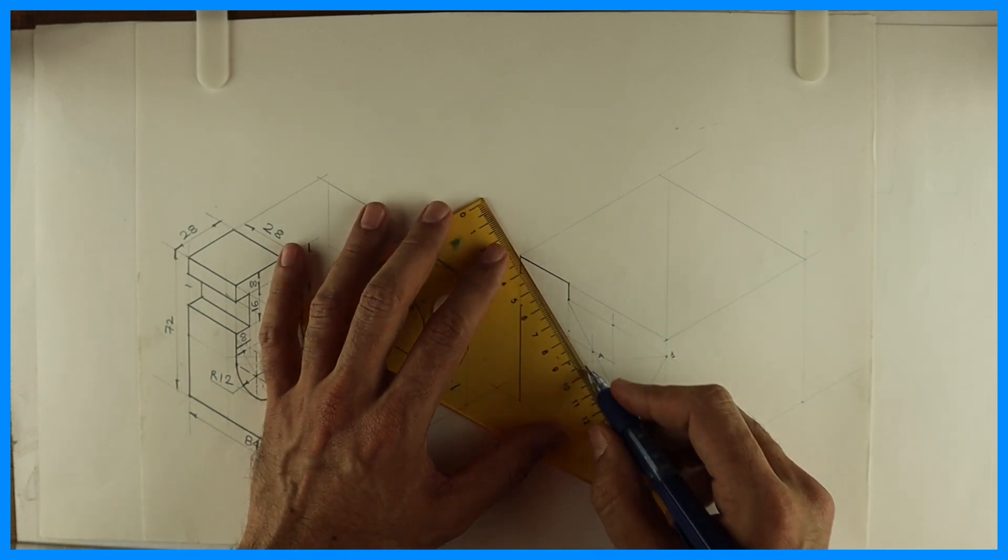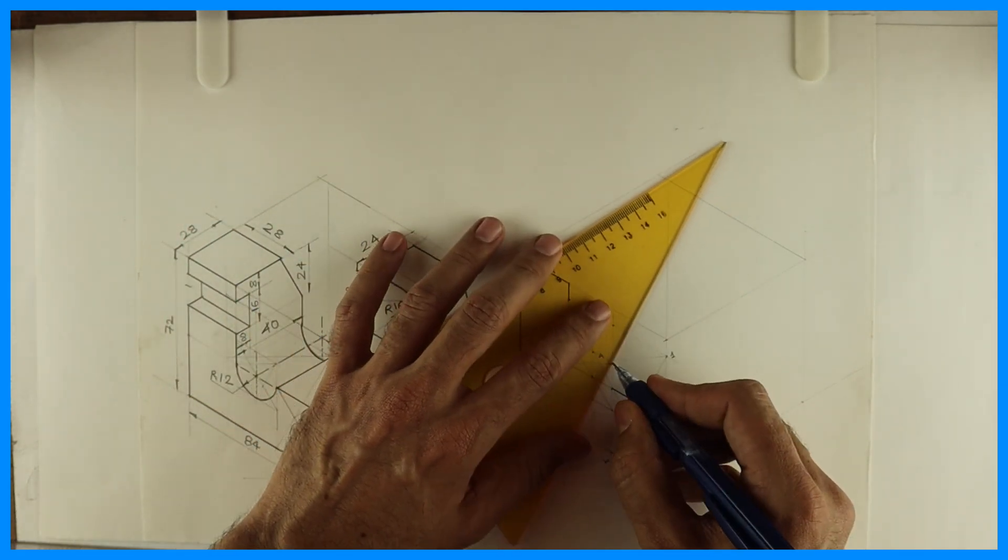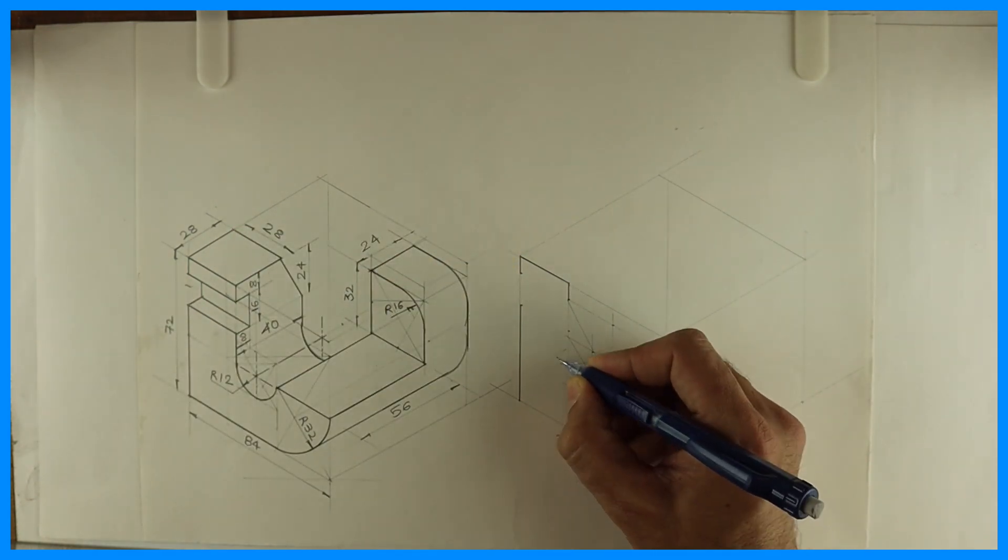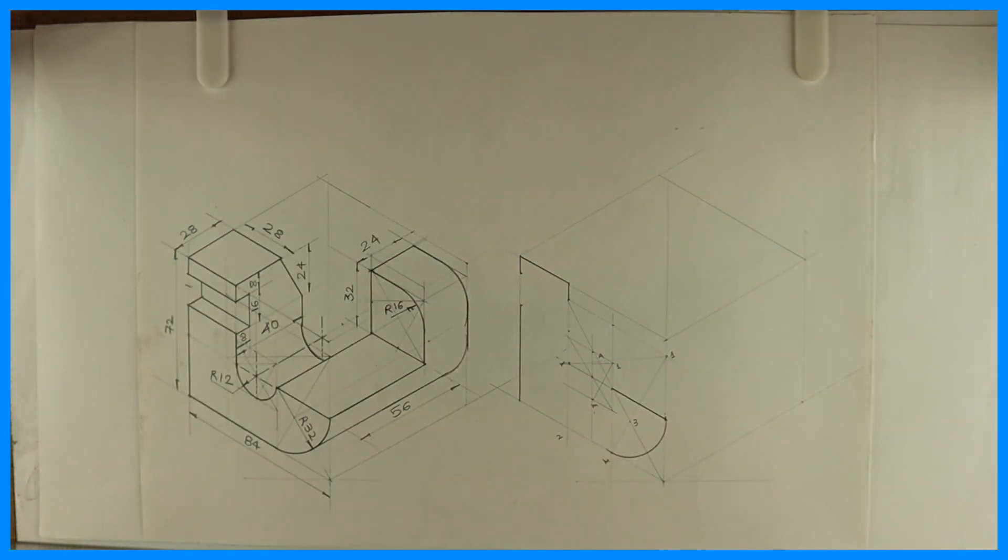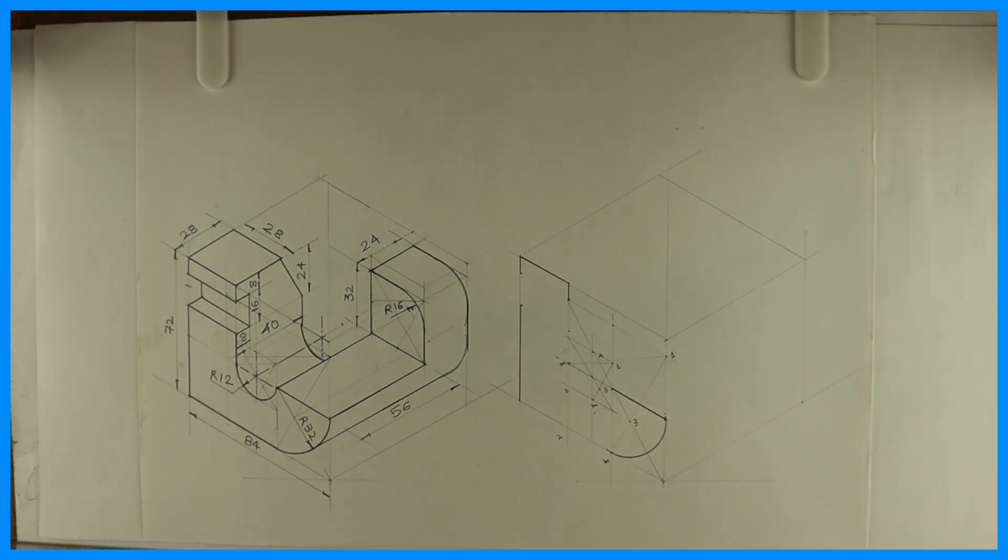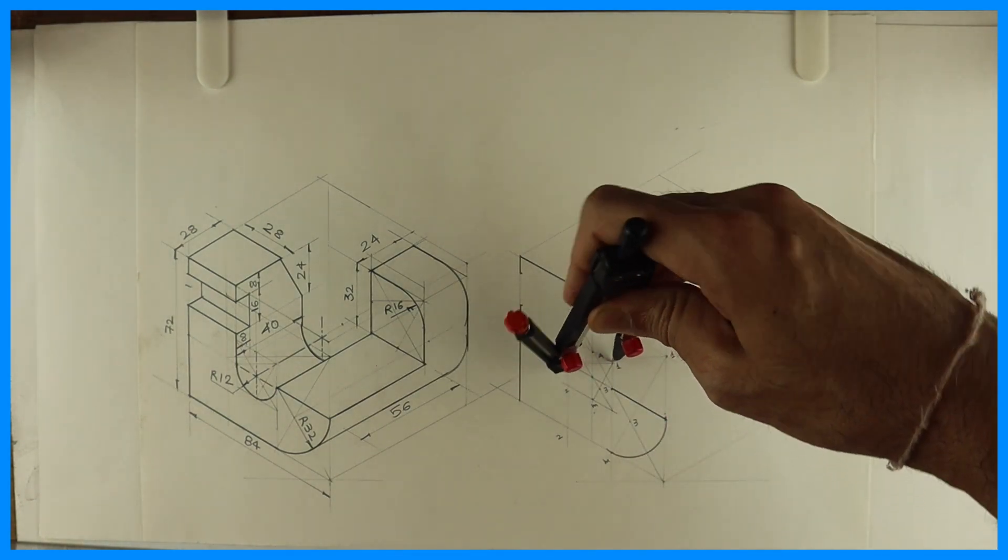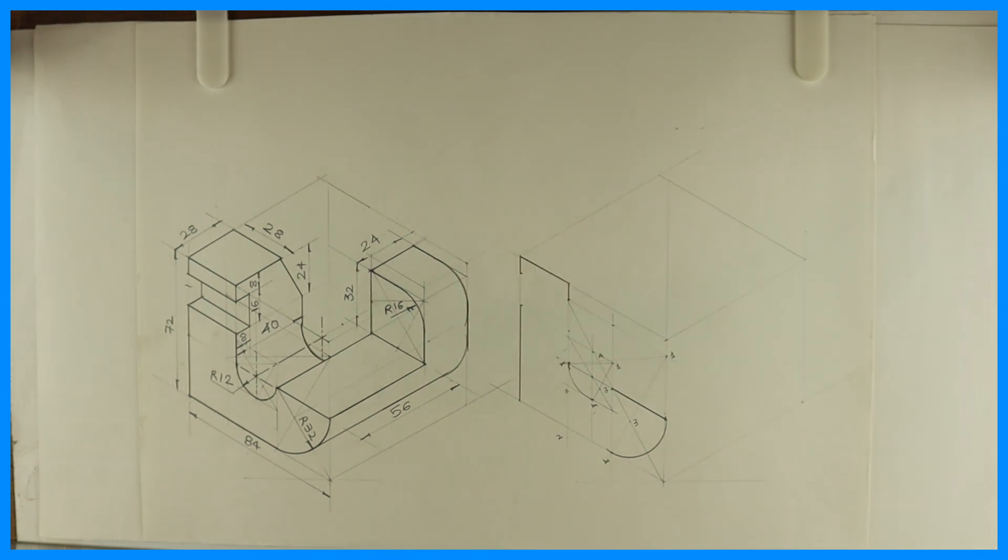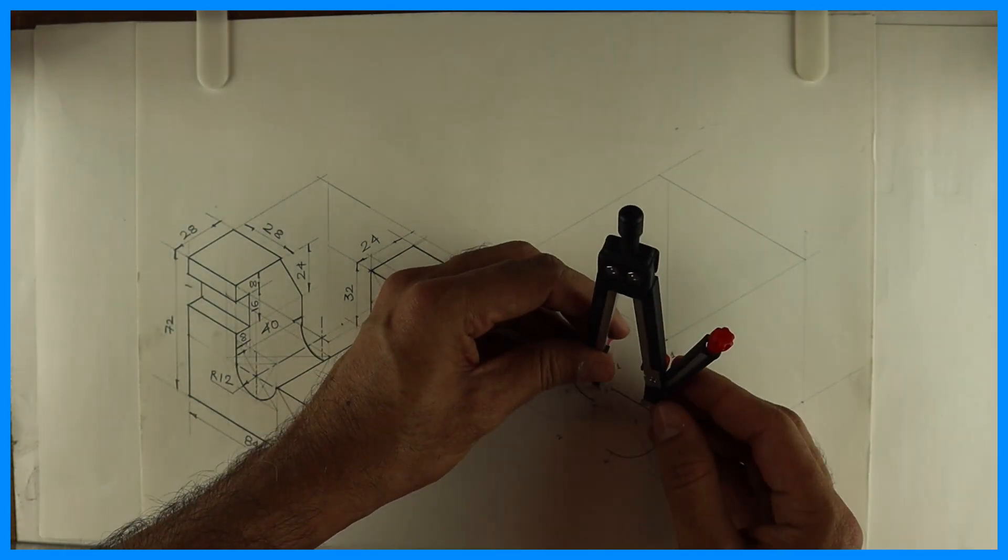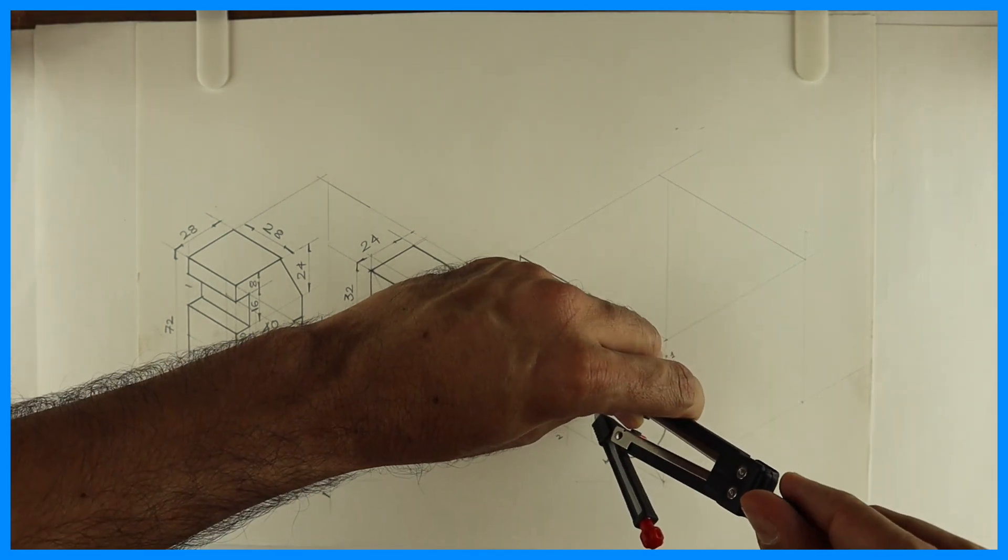You draw longest diagonal. Again you draw from midpoint. See from that corner, 1, you can draw opposite side midpoint. This is 2, this is 3. So from 1 to M you take and you draw arc.